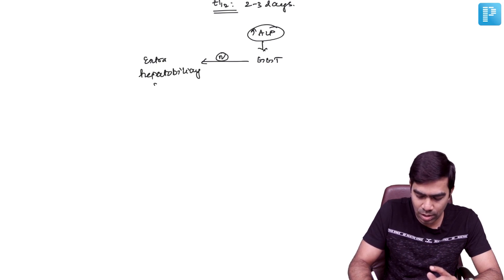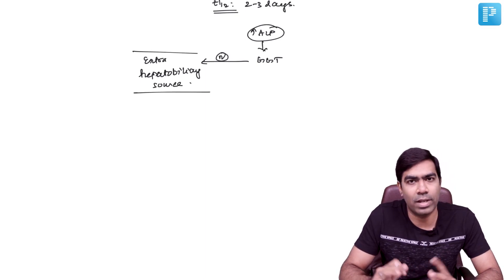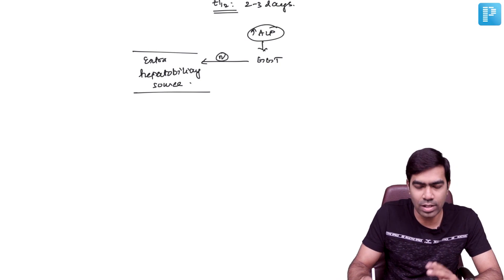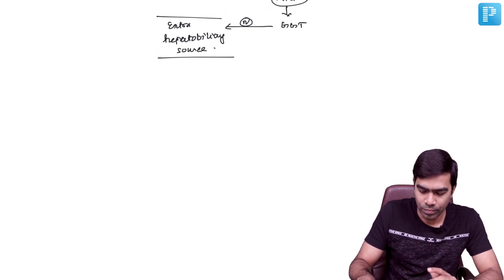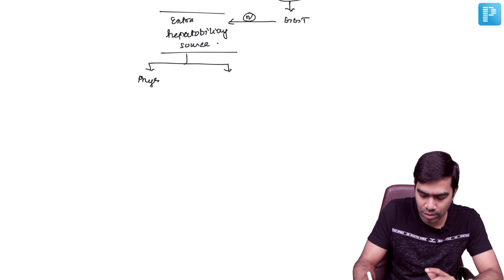If ALP is elevated but GGT is normal, it is not coming from the hepatobiliary tree — it is coming from an extra-hepatobiliary source. The reasons for this could be either a physiological rise or a pathological rise.